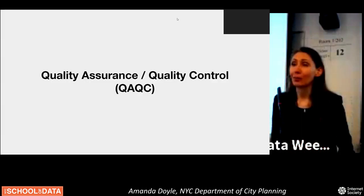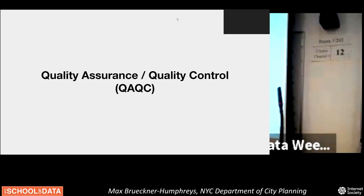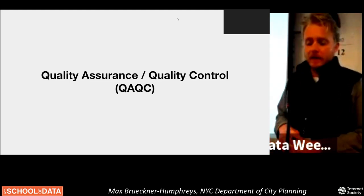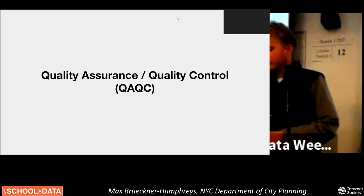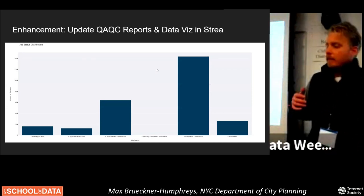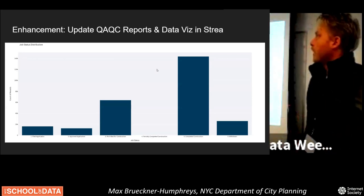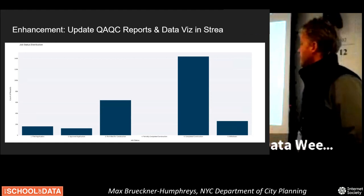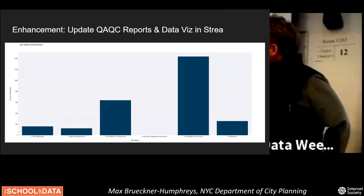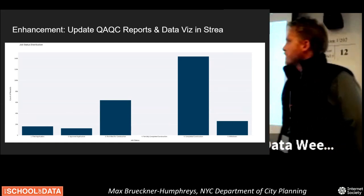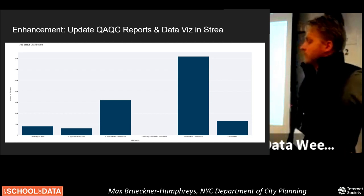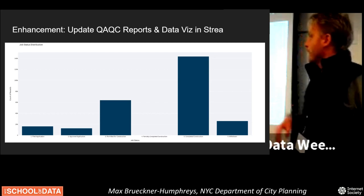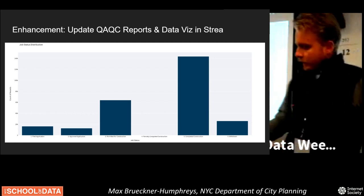I'm going to turn it over to Max, who's going to talk more about quality assurance and quality control. I'm Max, one of the data engineers at the Department of City Planning. One of the biggest enhancements we undertook this past fall was to update our QAQC reports and improve our data visualization graphs in our Streamlit app. This graph shows the job status distribution — we use these graphs to check our data for expected results and to ensure we don't have any crazy outliers from version to version.